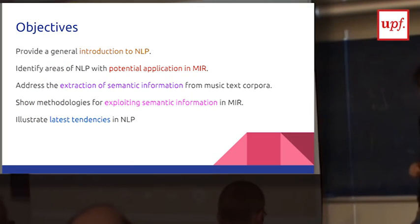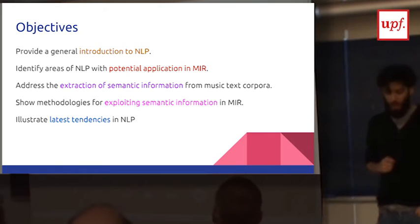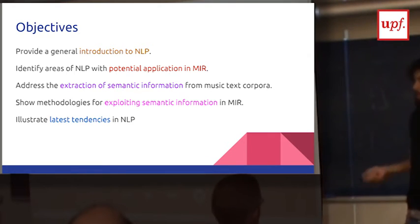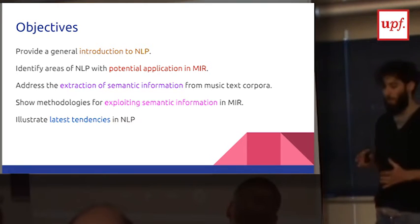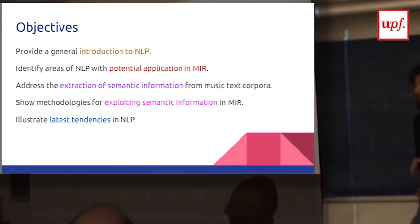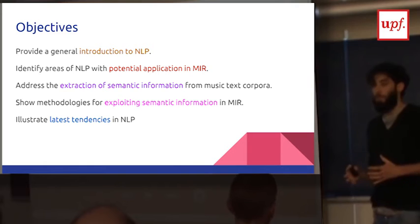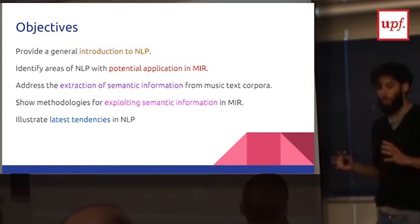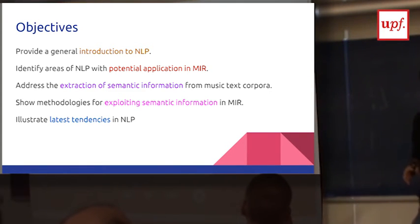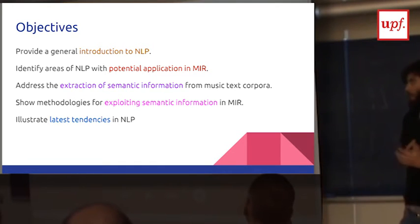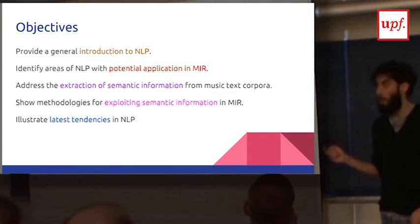The objectives of this tutorial are: first, to provide a general introduction to NLP; then to address which areas of NLP might be interesting to use in MIR; then to address the extraction of semantic information from texts and how to exploit this semantic information in music information retrieval and musicology; and finally, to illustrate some of the latest tendencies in natural language processing that can also be applied in MIR.